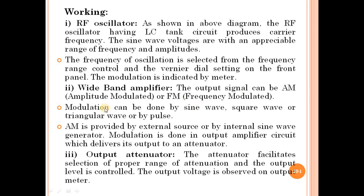This is called AM and FM — AM means amplitude modulated, and FM means frequency modulated. This output signal can be AM or FM. Modulation can be done by sine wave, square wave, triangular wave, or by a pulse.